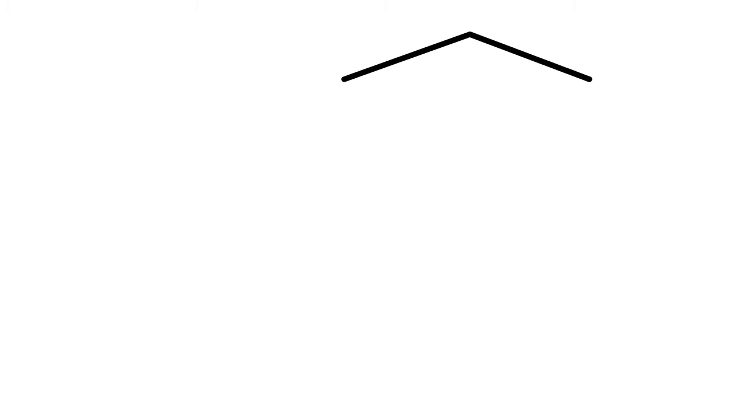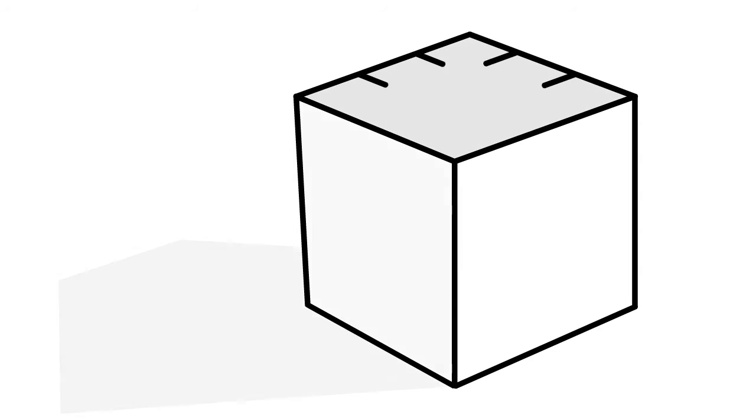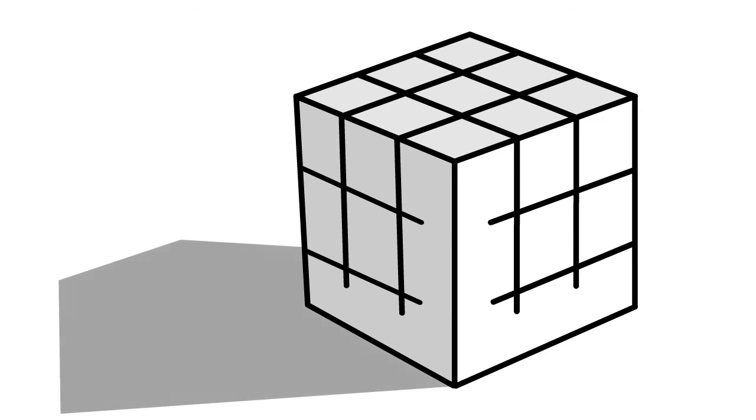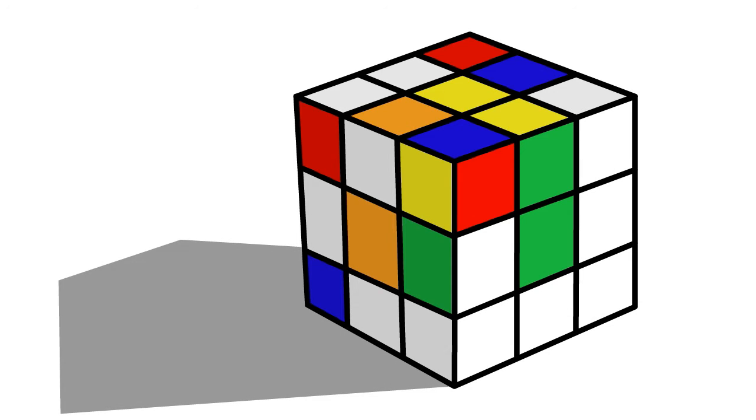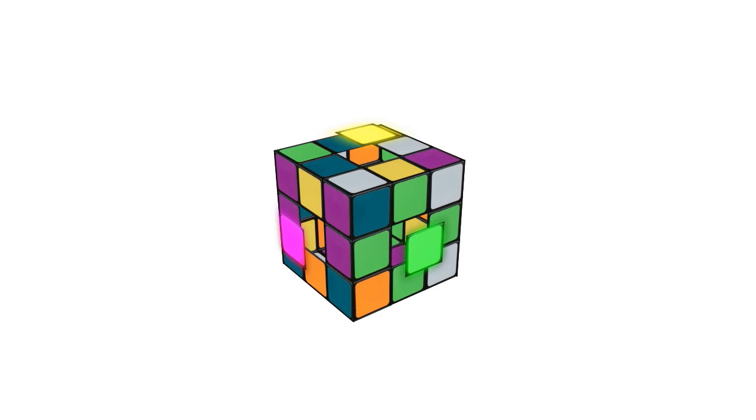For those of you who don't know, the Rubik's Cube is a cube comprised of 54 coloured stickers on smaller cubes, held together by a pivot mechanism which allows lines of cubes to be rotated. The aim of the game is to get all the coloured sides solved.